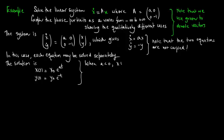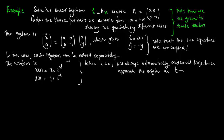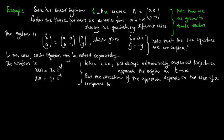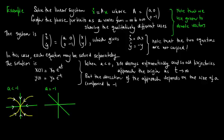When a is less than 0, x(t) decays exponentially, so all trajectories approach the origin as t tends to infinity. But the direction of approach depends on the size of a compared to minus 1. We consider numerous cases, beginning with a less than minus 1, then a equals minus 1, then minus 1 less than a less than 0.